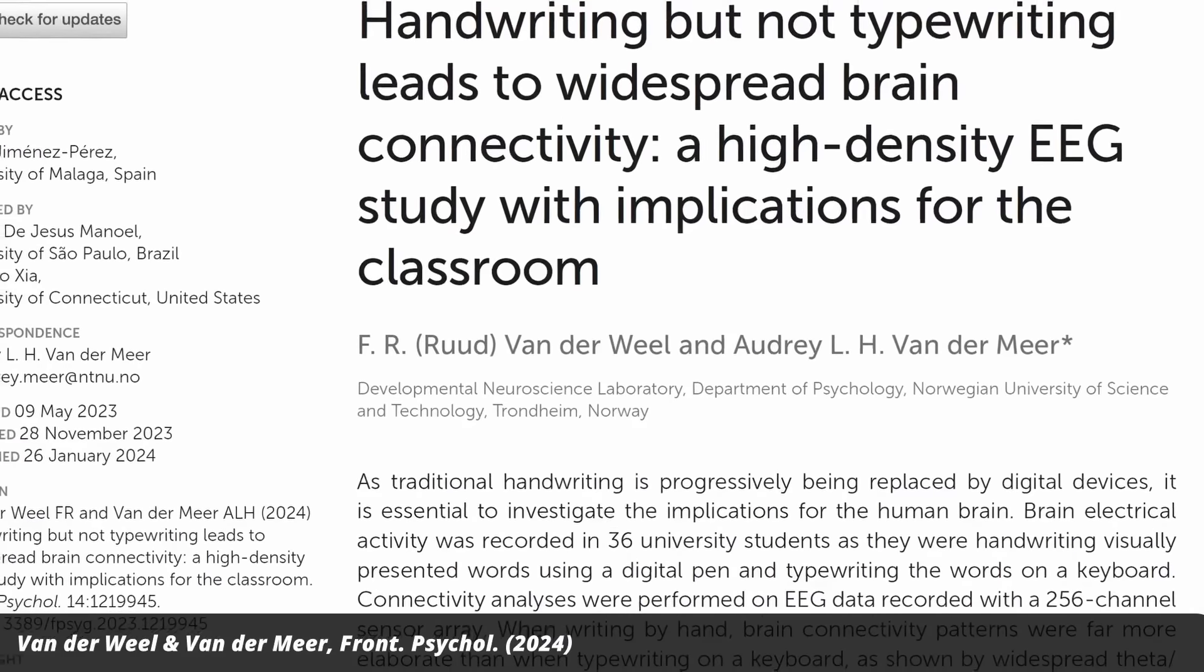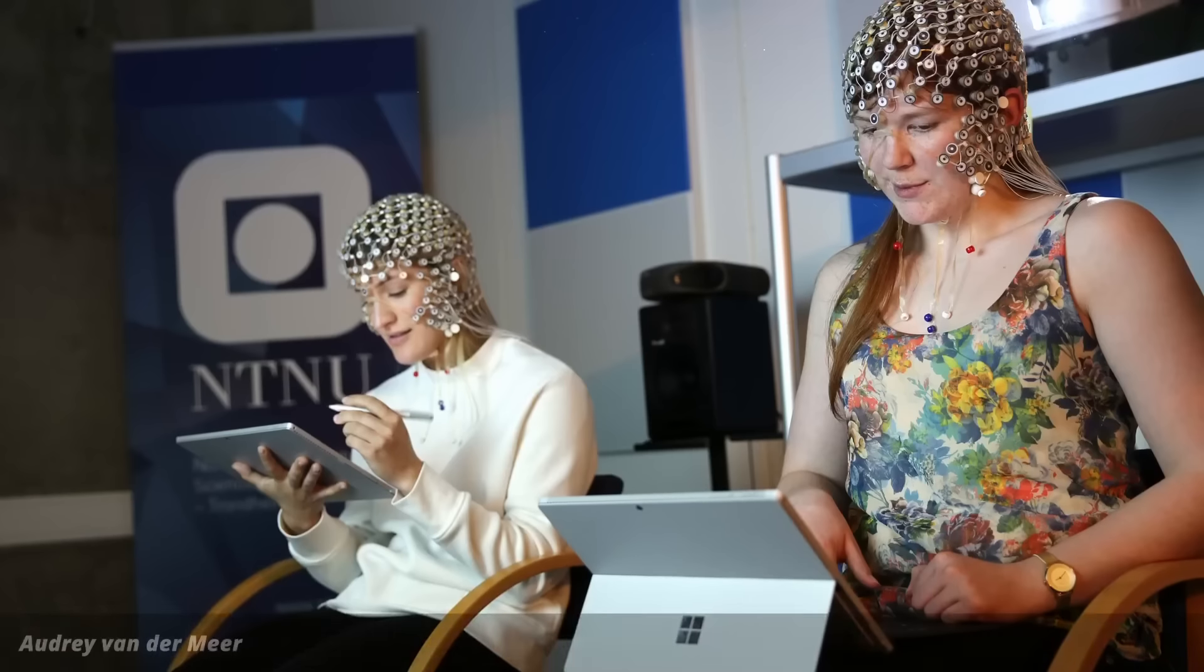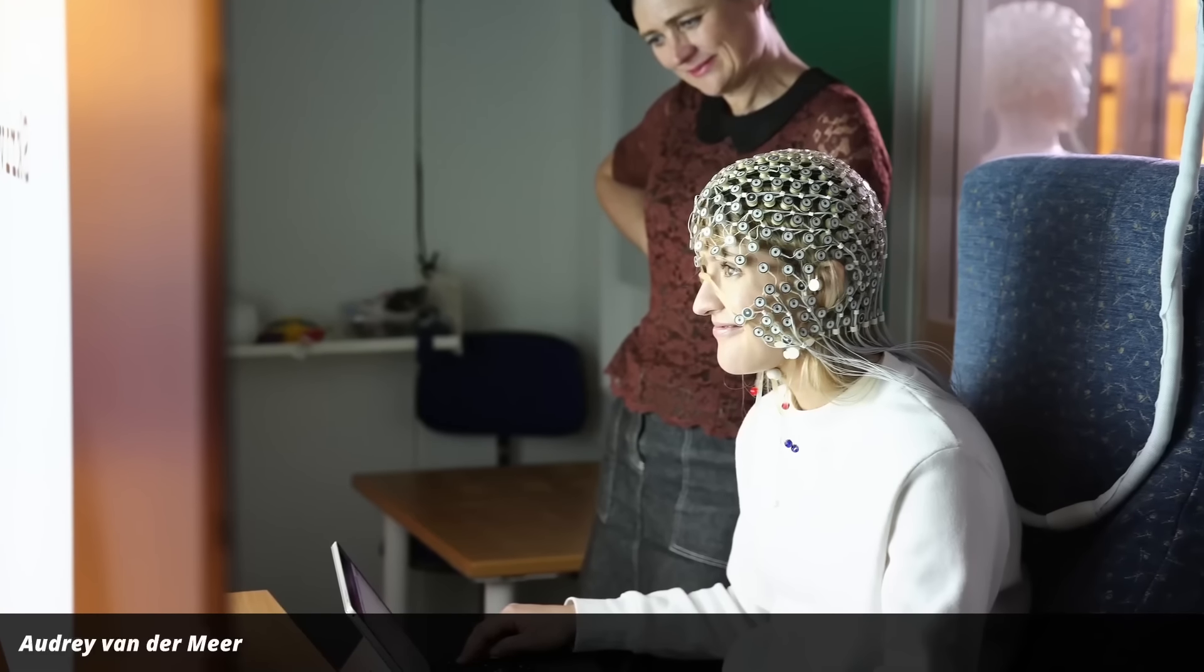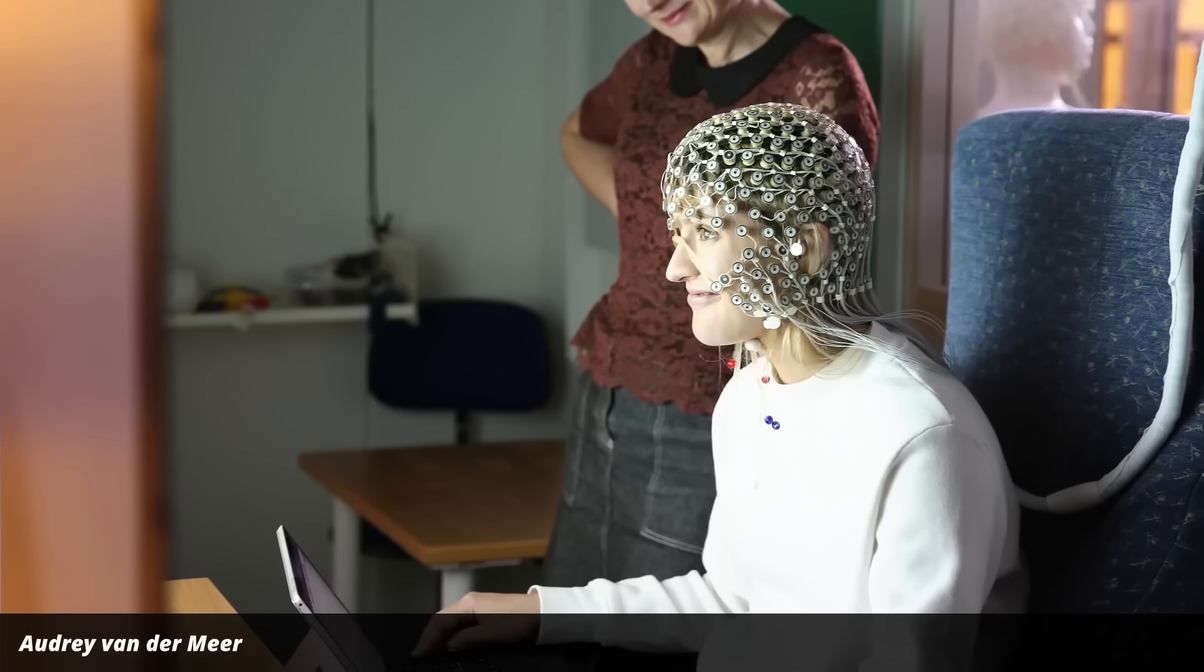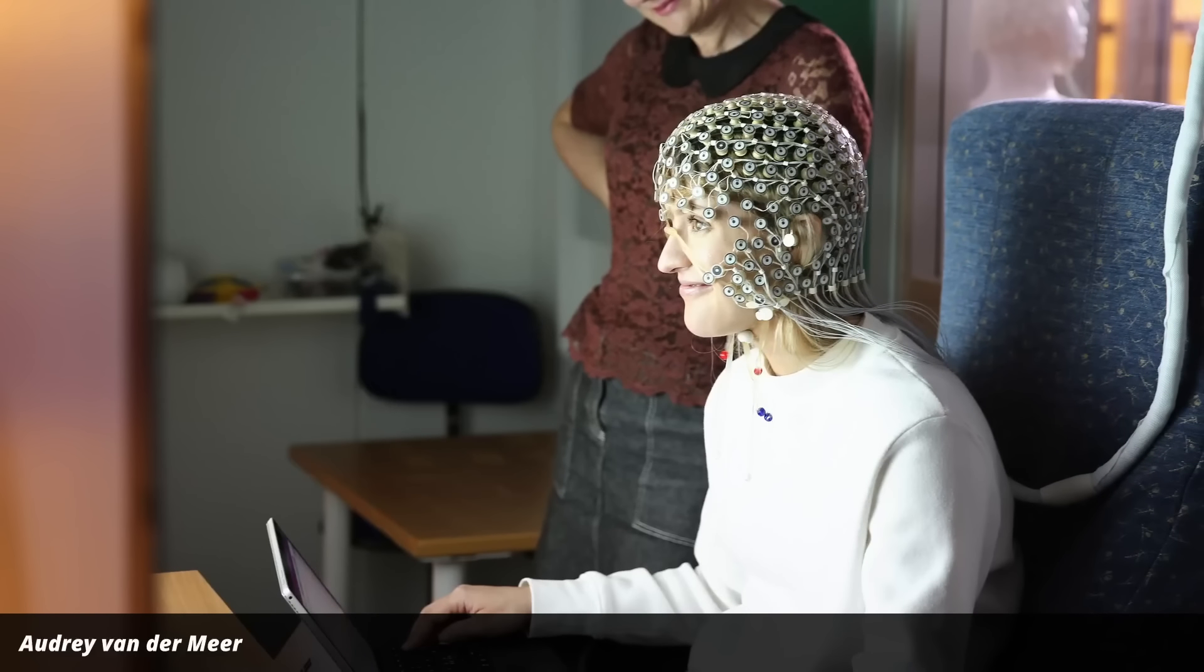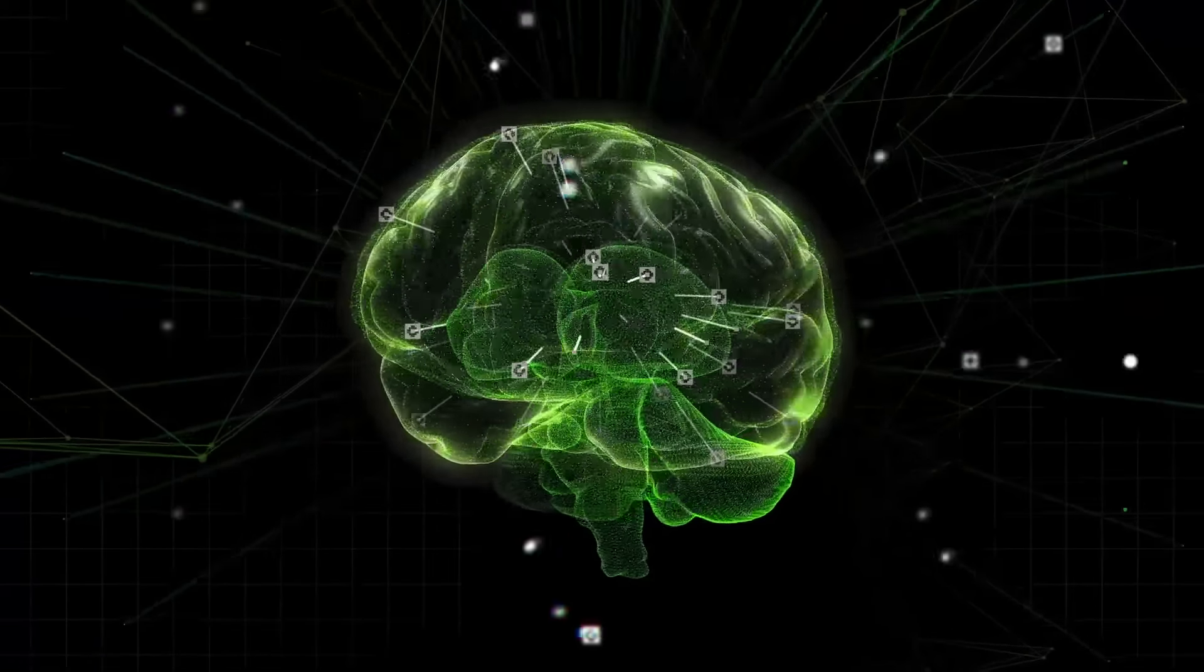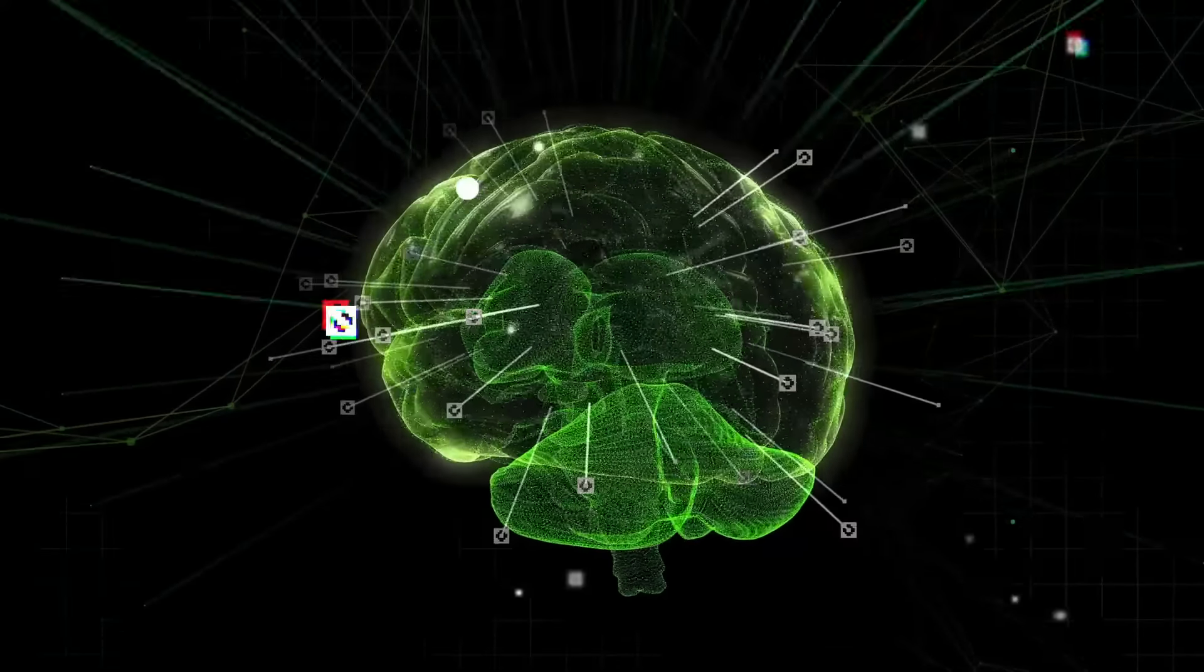For the new study now, they looked at something else. That's the number of connections that handwriting creates in the brain. For this, researchers at the Norwegian University of Science and Technology recruited 36 students and recorded their brain activity with 250 electrodes while the students were either writing with a pen or typing on a keyboard. They then analyzed the recording in different frequency bands and looked for correlations. The students who were writing by hand showed significantly more such correlations. The researchers argue that these widespread correlations across the brain are good because they are known to be important for memory formation.